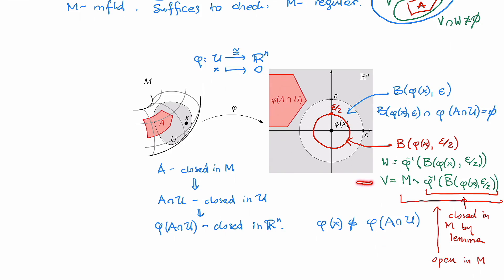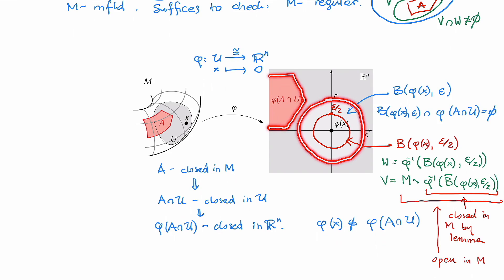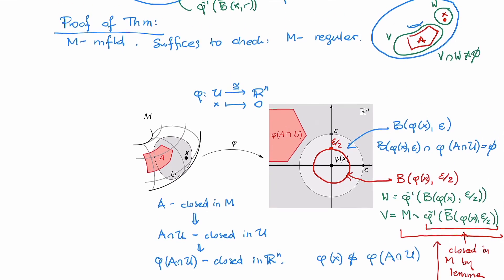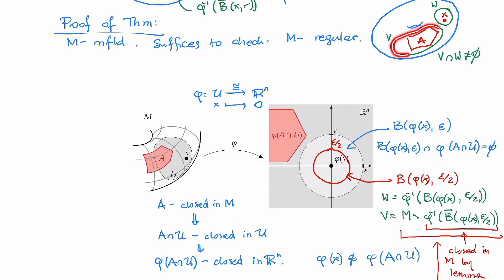V consists of all points of M except those mapped by phi into the closed ball of radius epsilon over 2. However, all points of A are mapped outside the even larger ball of radius epsilon, so no points of A are mapped into the smaller ball of radius epsilon over 2. Therefore all points of A belong to the complement, meaning A is contained in V. So V is an open set containing A.